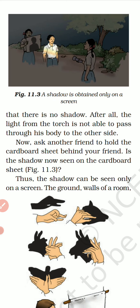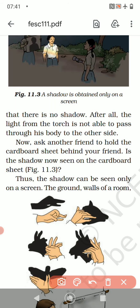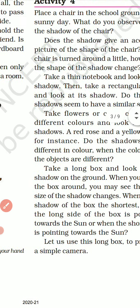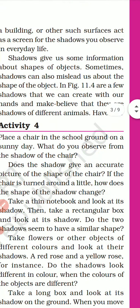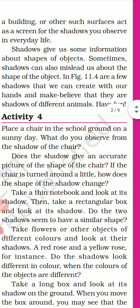Thus, shadows can only be seen on a screen. The ground, walls of a room, a building, or other such surfaces all act as screens for the shadows we observe in everyday life. Shadows give us information about the shapes of objects, but sometimes shadows can also mislead us about the shapes of objects. For example, we can create shadows with our hands that look like different animals.